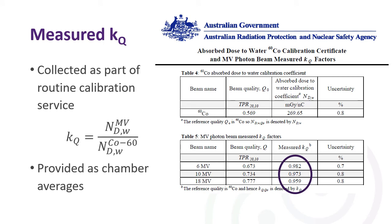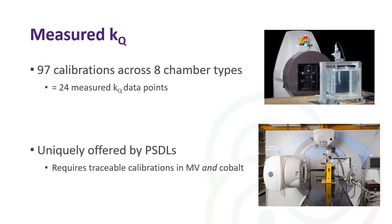The measured KQs we submitted were collected as part of our routine calibration services. The KQ in the measured sense is the NDW in MV over the NDW in Cobalt-60. You can see on the right hand side a copy of a report that will be issued, showing the three KQ values for the three ARPANSA energies. In each case we've provided these values as an average KQ measured across different chamber types. For this we submitted 97 different calibrations across eight different chamber types, giving 24 different measured KQ data points — 6, 10, and 18 MV by eight chambers — a unique service offered by primary standards dosimetry laboratories requiring traceable calibration services in both MV and Cobalt-60.